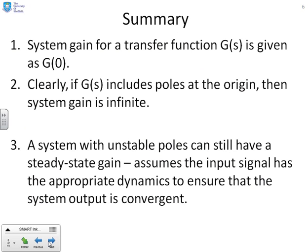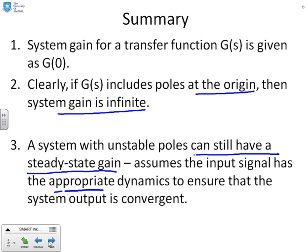In summary, the system gain for a transfer function G of S is given by substituting S equals zero, i.e. G of zero. If G of S includes poles at the origin, the system gain is infinite. A system with unstable poles can still have a steady state gain — it's possible to put appropriate dynamics into the input signal to ensure the output is still convergent, so the steady state gain is still well defined.